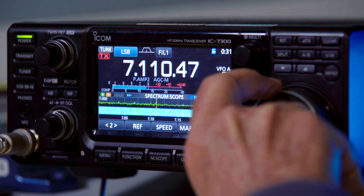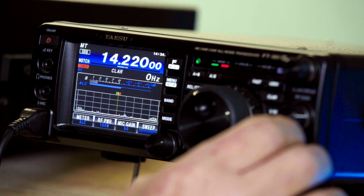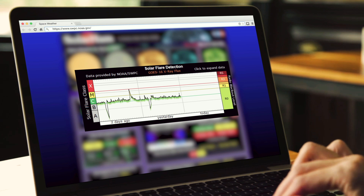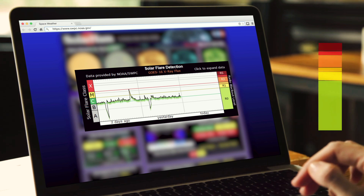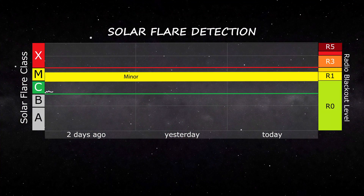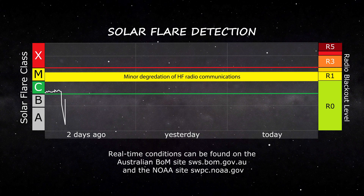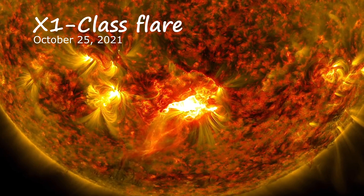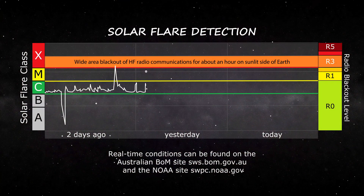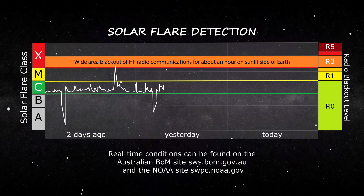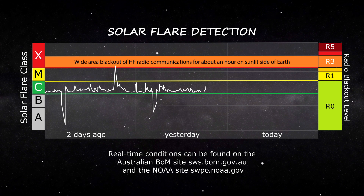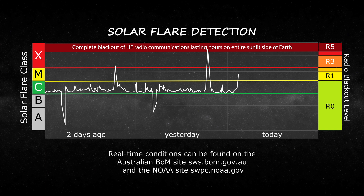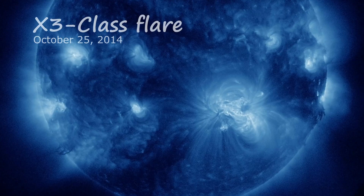Radio blackouts are classified using a five-level scale, which correlates to the solar flare classification. On many solar websites, you'll see a space weather overview showing real-time conditions with the R value or radio blackout value. R1 blackouts are minor, typically occurring after an M1 flare, and are indicative of weak or minor degradation of HF radio communication. R3 blackouts are strong, following an X1 flare, resulting in a wide-area blackout of HF radio communications and loss of radio contact for about an hour on the sunlit side of the Earth. R5 blackouts are extreme and thankfully very rare, resulting in a complete HF radio blackout on the entire sunlit side of the Earth lasting for a number of hours.